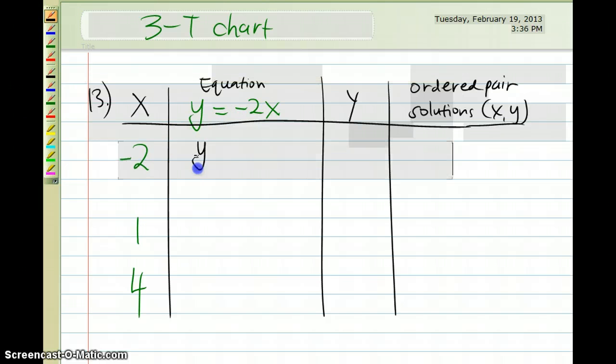I'm going to plug in negative 2. So y is equal to negative 2 times negative 2. And that would give me negative times a negative as a positive 4. And my first solution would give me negative 2, 4.